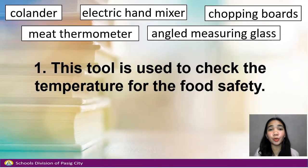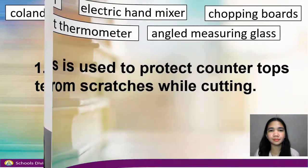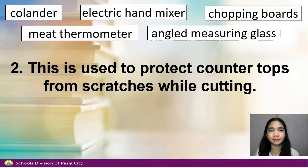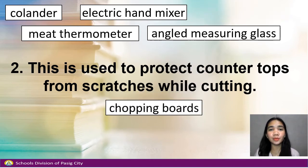Number 1. This tool is used to check the temperature for food safety. Answer: Meat thermometer. Number 2. This is used to protect countertops from scratches while cutting. Answer: Chopping boards.